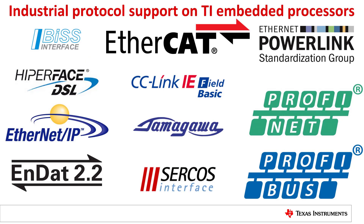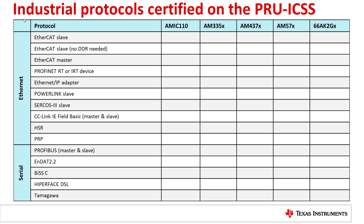As you can see, Texas Instruments supports a large number of industrial Ethernet, Fieldbus, Encoder, and Redundancy protocols across our embedded processor portfolio, including EtherCAT, PowerLink, Profinet, and Hyperface DSL, just to name a few. Now let's dive into each device family to show exactly which protocols each processor can support.